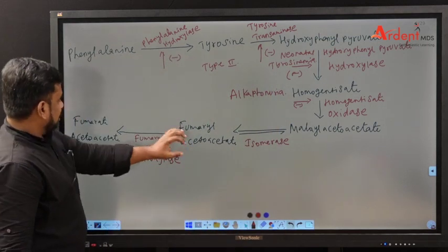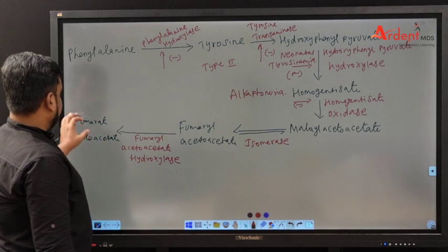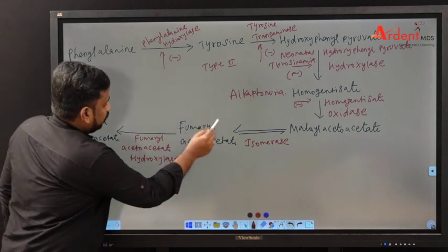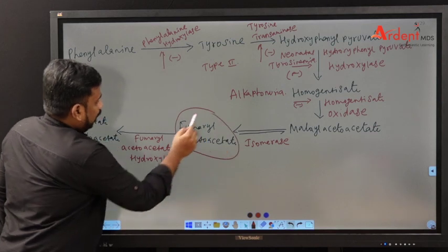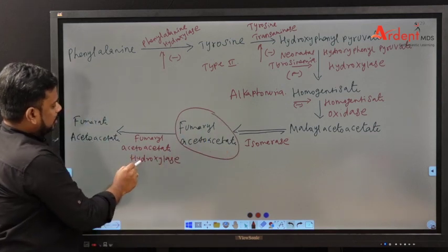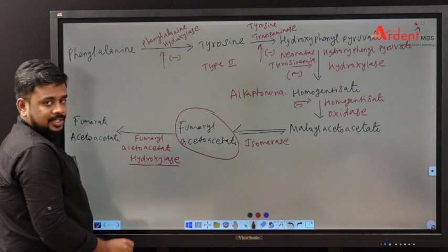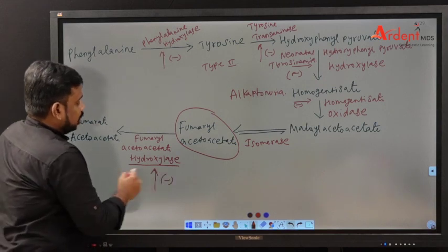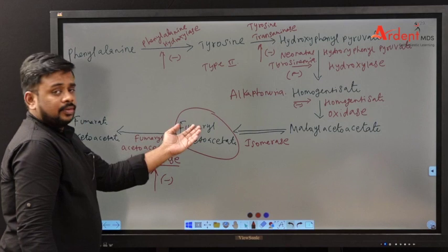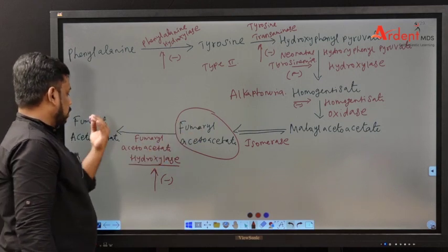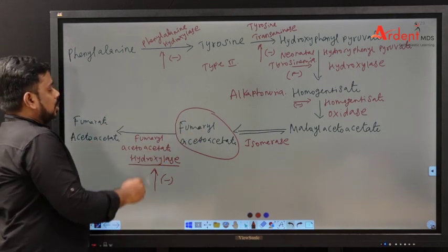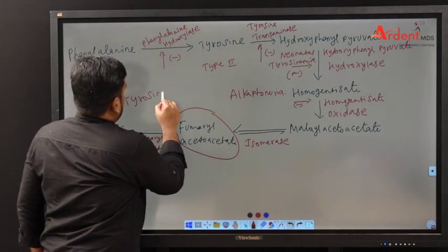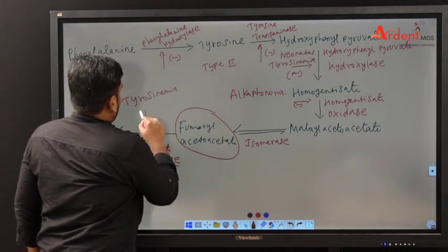Finally, fumarylacetoacetate is converted to fumarate and acetoacetate by fumarylacetoacetate hydroxylase. A defect in this enzyme — which is the last enzyme in the pathway — leads to tyrosinemia type 1.